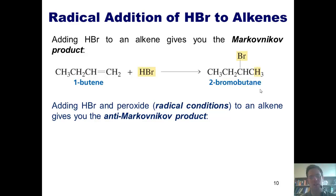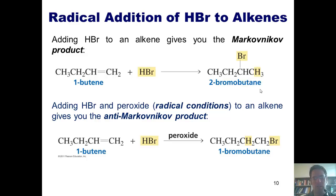Adding HBr and peroxide, that is, radical conditions to an alkene, gives you the anti-Markovnikov product. So if I ever wanted to put the bromine in the anti-Markovnikov position, these are the conditions that I would use.